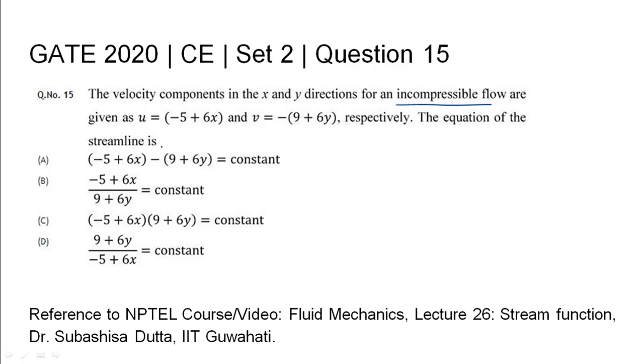If we have a fluid particle flowing along this streamline, we can indicate its position vector as dr vector. This would indicate the direction in which the fluid particle is flowing, and the velocity of the fluid particle will also be along this vector for this time instant.